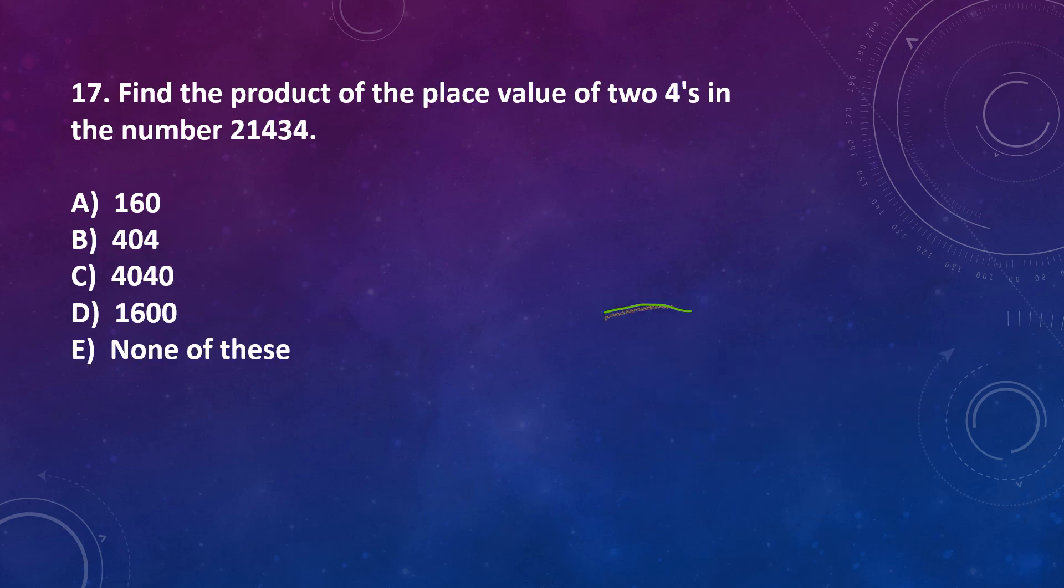Question number 17: Find the product of the place value of 2 fours in the number 21434. Option A: 160, Option B: 404, Option C: 4040, Option D: 1600, Option E: none of these. The place value of this 4 is 4, and this 4, the place value of this 4 is 400. So if we multiply 4 multiplied by 400 equals 1600. So our answer is option D, 1600.